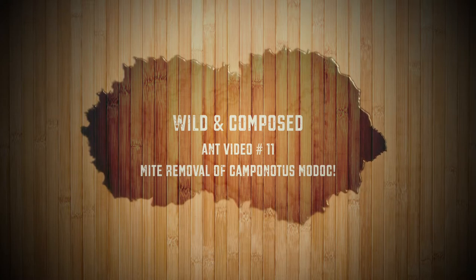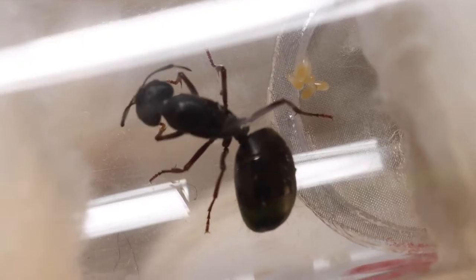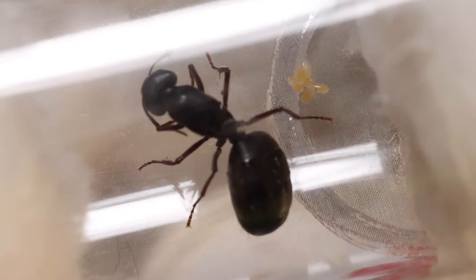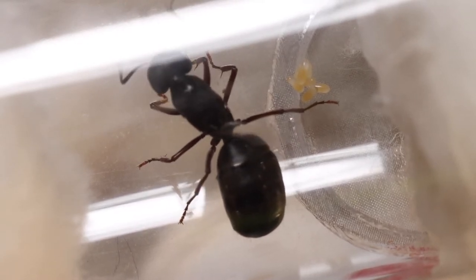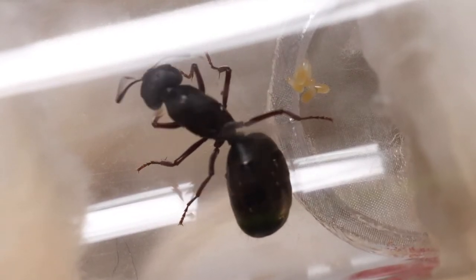A little while ago I caught a Camponotus Modoc Queen and upon closer examination noticed that she was covered in blood-sucking mites. They're the red ones. You can see one on one of her legs there.